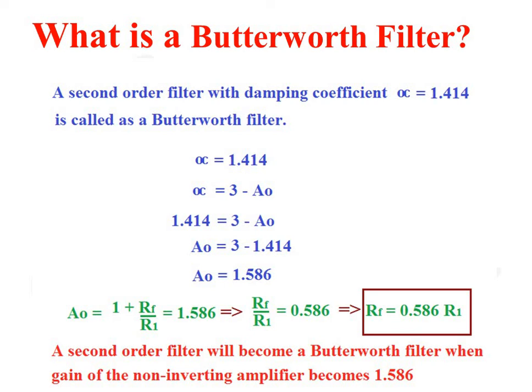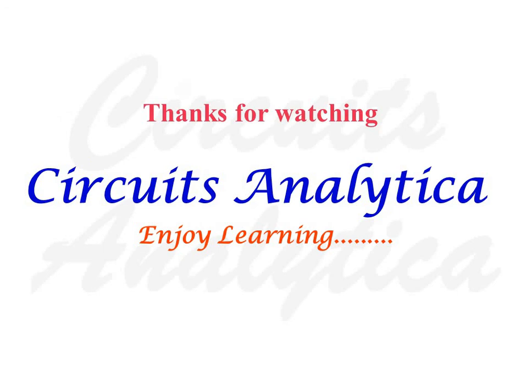The gain of the non-inverting amplifier in a Butterworth filter is 1.586. Since gain = 1 + RF/R1, we get RF/R1 = 0.586, meaning RF = 0.586·R1. So a second-order filter becomes a Butterworth filter when the gain of the non-inverting amplifier is 1.586. Thanks for watching Circuits Analytica. Enjoy learning.